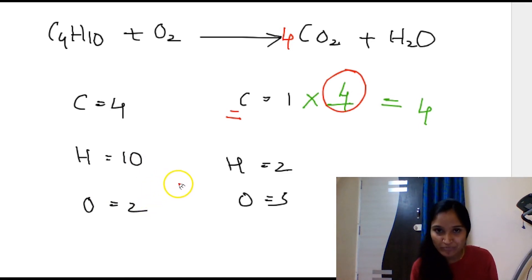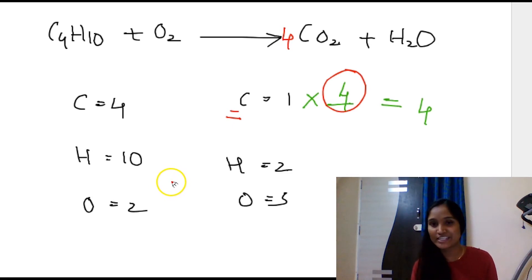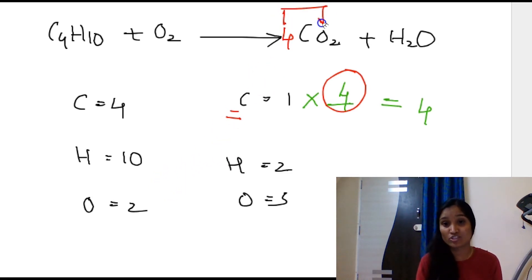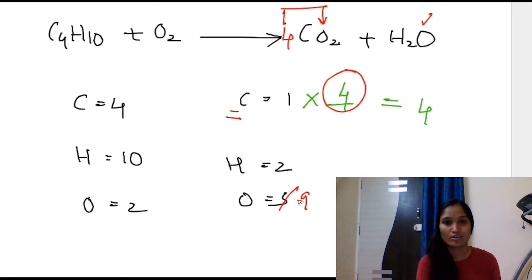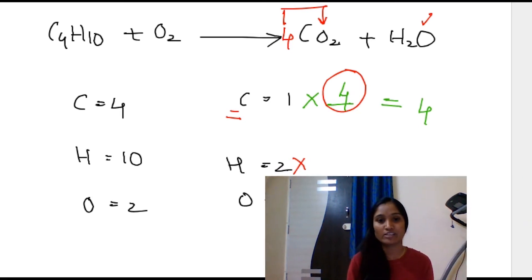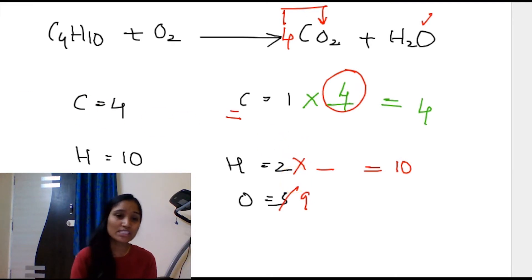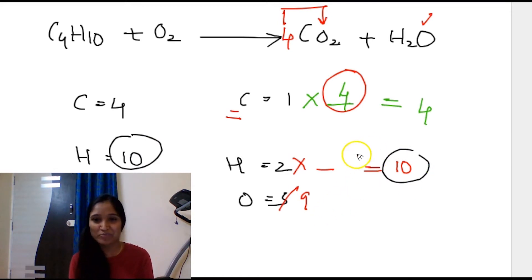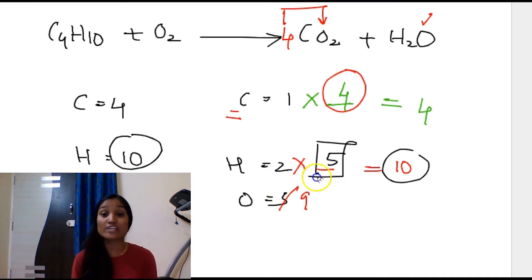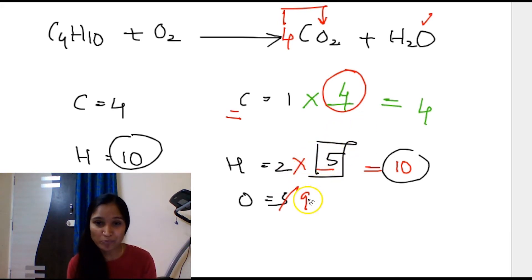Yes, the oxygen count has changed. There are now 8 oxygens from 4CO2 plus 1 from H2O, giving a fresh count of 9 oxygens on the right-hand side. Moving on to hydrogens: we have 10 on the left and 2 on the right. To equalize, multiply 2 by 5 to get 10. Place the 5 as a prefix before H2O on the right-hand side, making it 5H2O.